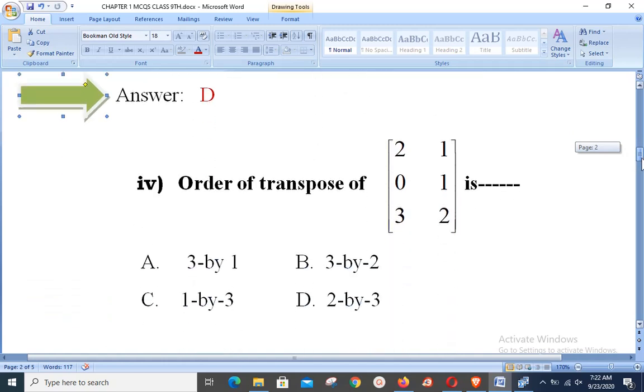Fourth objective: order of transpose of the entries of this matrix row-wise are 2 1, 0 1, 3 2, is dash. Dear students, here the given matrix has order 3 by 2.